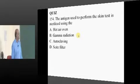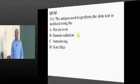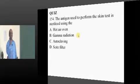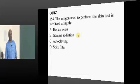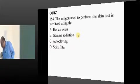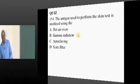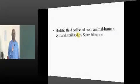A slightly tougher question: the antigen used for the Casoni test — how is it sterilized? Swati and Shweta propose autoclave. Maverick proposes gamma radiation. Tirupati gets it correct: hydatid fluid collected from the human cyst is sterilized by Seitz filtration — that is what needs to be remembered.